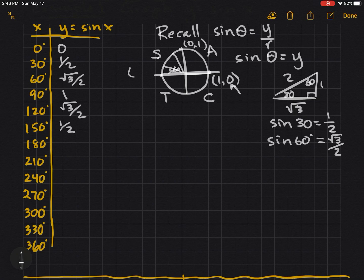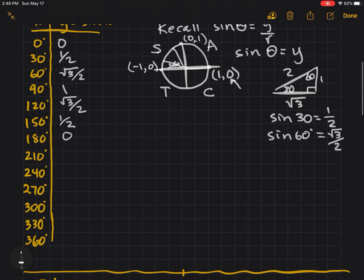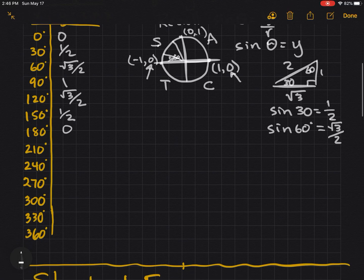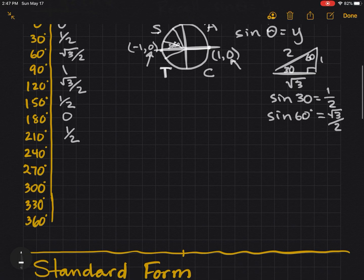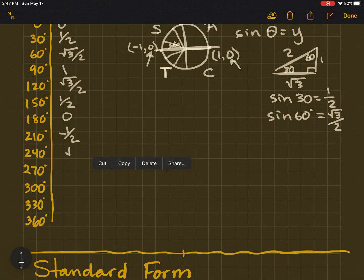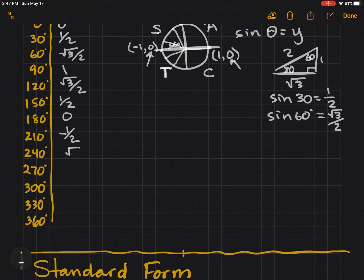180 has a coordinate of negative 1, 0. So sine is 0. Because that's the y coordinate. 210 would have a 30 degree reference. So we know the sine of 30 is 1 half. But in the third quadrant, sine is negative. Also, our next angle has a reference. 240 has a reference of 60. So that's radical 3 over 2. But it's negative in this quadrant.